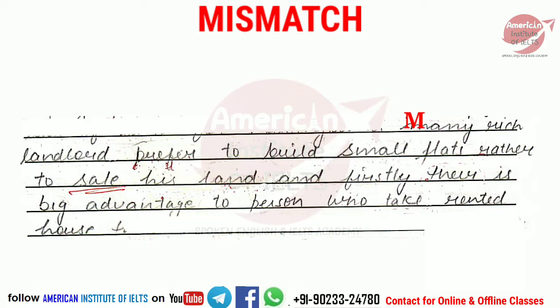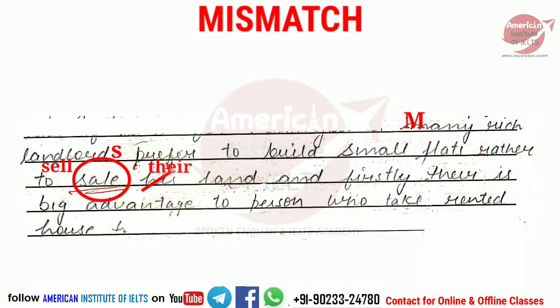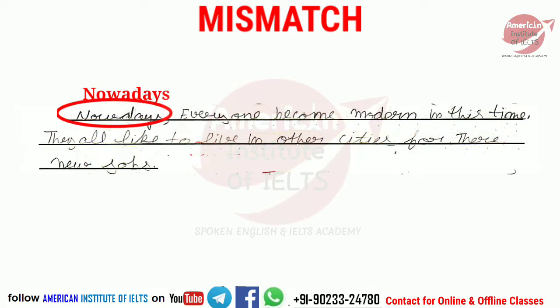Here is the second example — try it yourself first. Working it out: 'Many rich landlords' — since 'many' is used, we need 'landlords'. 'Prefer to build small flats rather to sale' — 'sale' spelling should be 'sell', so 'rather to sell'. Then 'his land' — 'his' pronoun doesn't match 'landlords' (plural), so it should be 'their land'. And 'there is big advantage' — that 'there' should be spelled t-h-e-r-e. 'A person who takes this house on rent' — since 'person' is singular, we need 'who takes' with an 's'.